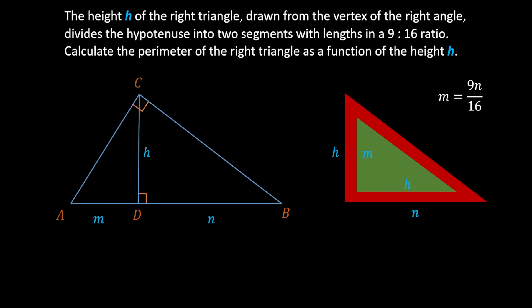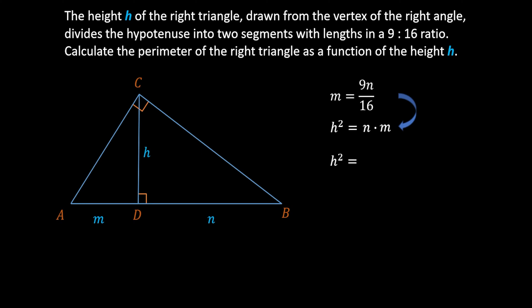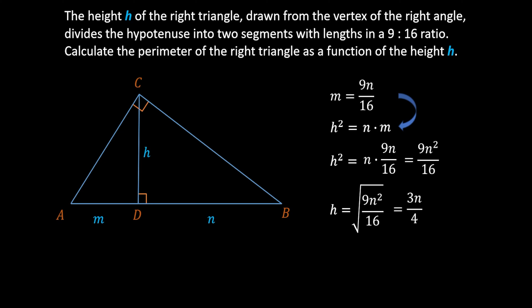Applying the rule of similarity of these two triangles, the ratio between the legs must be the same. So H over N must equal M over H. Cross-multiplying, we get H squared equals N times M. Substituting M = 9N/16, we get H squared equals 9N squared over 16. Therefore H equals the square root of 9N squared over 16, which is 3N over 4.